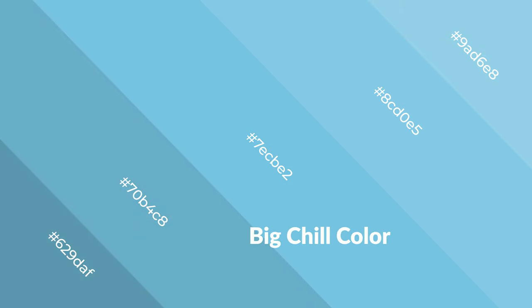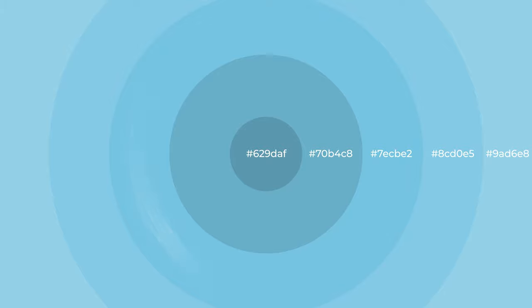Cool colors are like water — ice, sky, grass, soft, and snow. You can see them used in baby products.